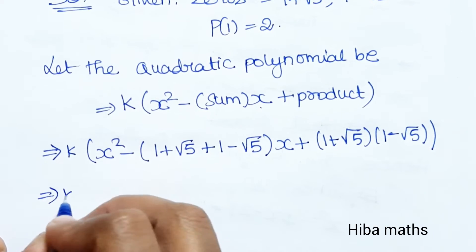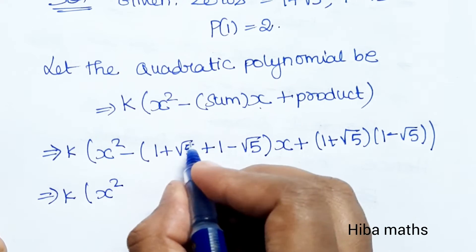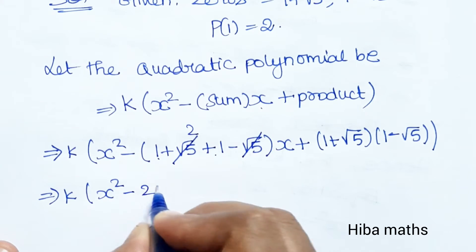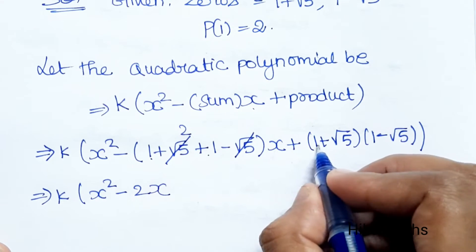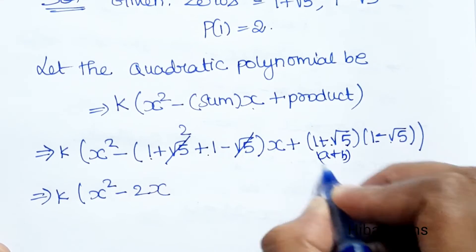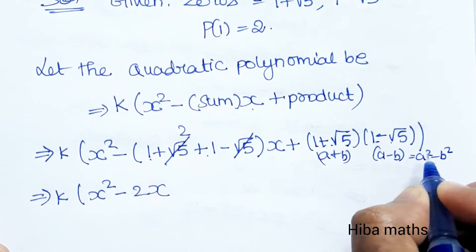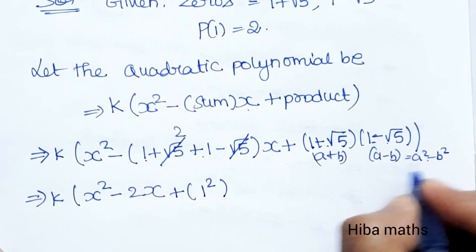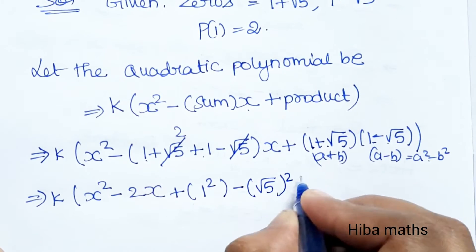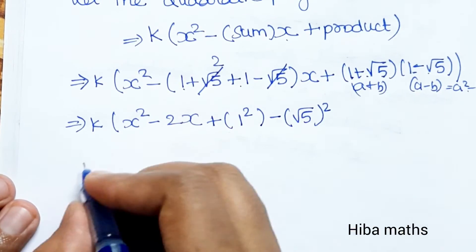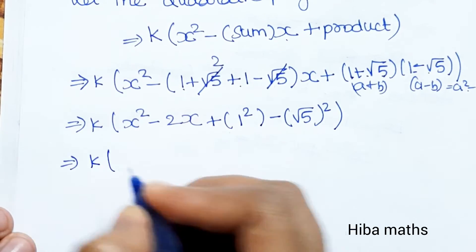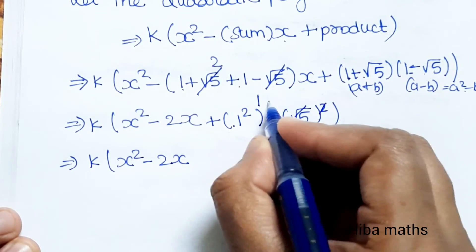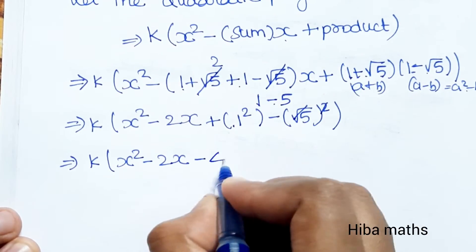Next line: k times x squared. The root 5 terms cancel, giving 1 plus 1 = 2, so minus 2x. For the product of roots, using the (a+b)(a-b) = a² minus b² formula: 1 squared minus (root 5) squared = 1 minus 5 = minus 4. So we get k times (x squared minus 2x minus 4).